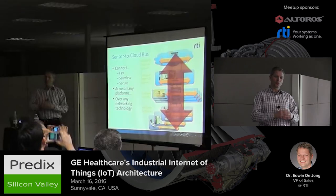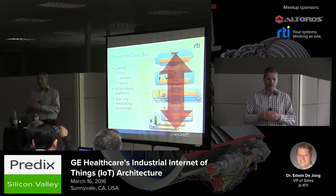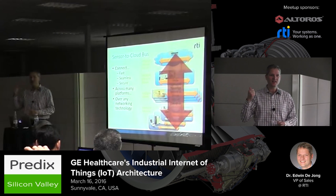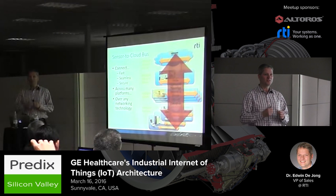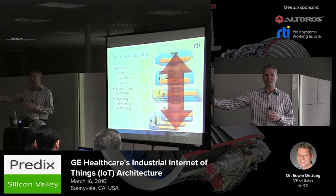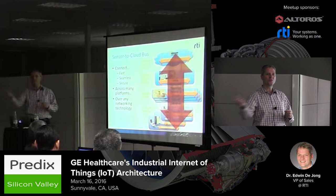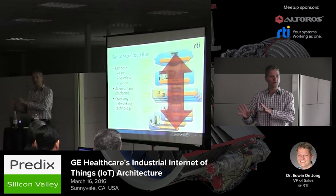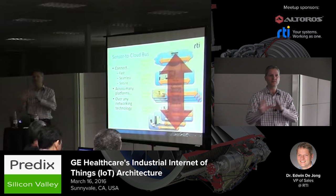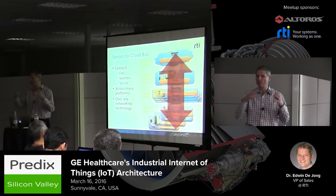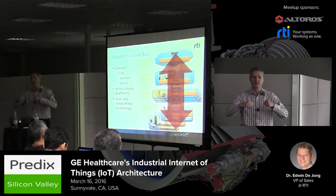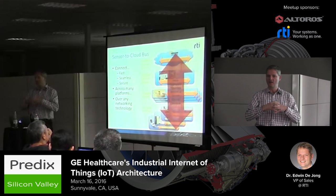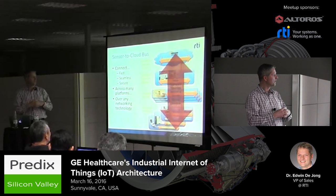I don't see a surgeon performing heart surgery from the International Space Station that quickly, but they will do it remotely from another hospital. So there is a wide area network involved where the quality of service will be very different from the quality of service within the surgical robot itself. And the industrial internet is going to integrate all those different systems.